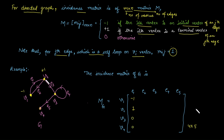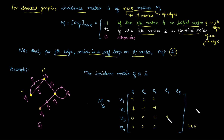E2 edge starts from V2, so its entry is −1, and ends at V1, so V1's entry is +1; the rest are 0. E3 edge starts from V2 (entry −1) and ends at V3 (entry +1); the rest are 0. E4 is a self-loop — it starts and ends at the same point, so we write +1 (not −1) and the rest are 0. E5 starts from V3 (entry −1) and ends at V4 (entry +1); the rest are 0. This is the incidence matrix for the directed graph.